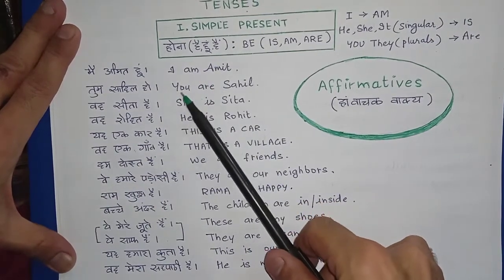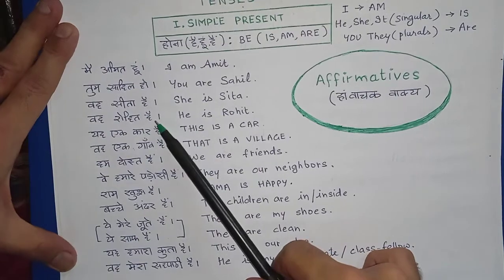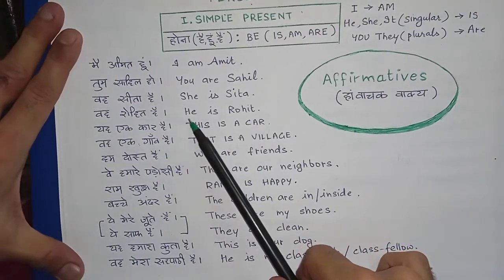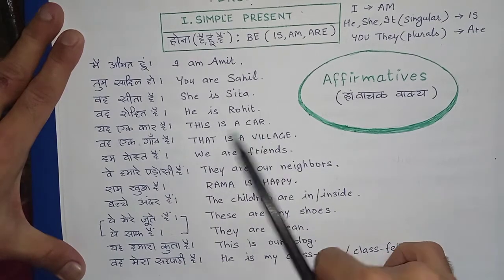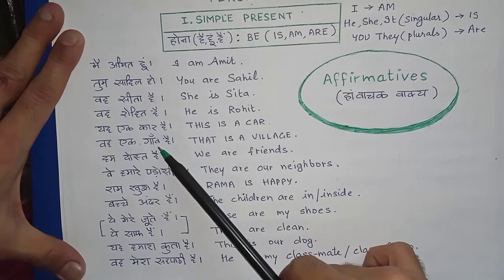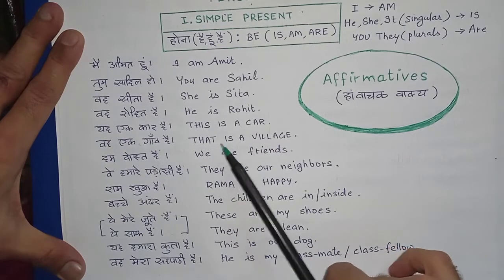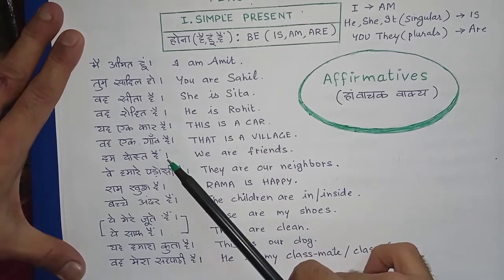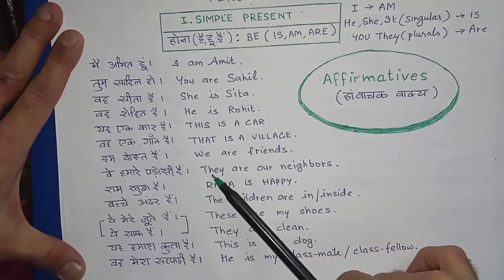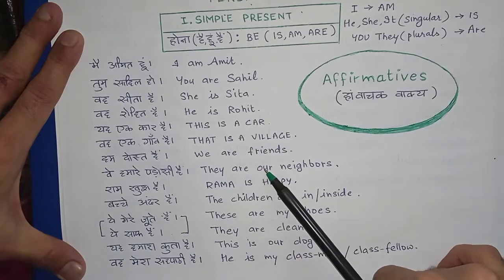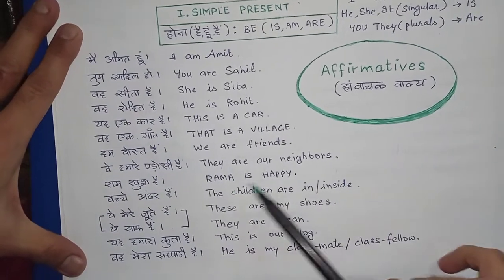Main Amit hoon — I am Amit. Tum Sahil ho — You are Sahil. Woh Sita hai — She is Sita. Woh Rohit hai — He is Rohit. Yeh ek car hai — This is a car. Woh ek gaon hai — That is a village. 'Yeh' ke liye this, 'woh' (door ki cheez) ke liye that. Hum dost hain — We are friends.